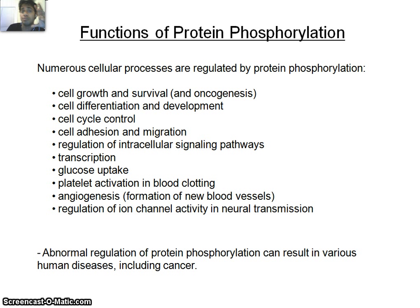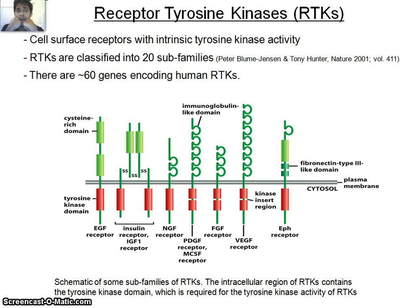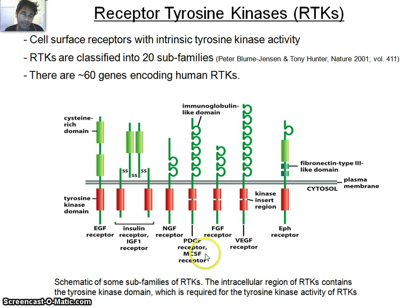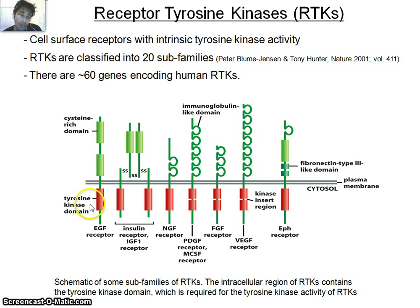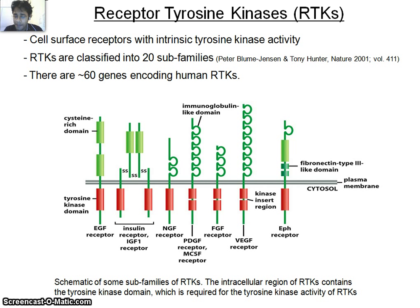Any abnormality or mutation in these regulatory pathways will lead to severe diseases like cancer. Regarding the broad family of tyrosine kinases: cell surface receptors with intrinsic tyrosine kinase activity have around 20 families, and there are 60 genes encoding human receptor tyrosine kinases. These include EGF receptor, insulin receptor, NGF receptor, PDGF, M-CSF receptor, and others. In the cytosolic side, these receptors all have a tyrosine kinase domain, shown here in red, which is the key player mediating downstream signaling.